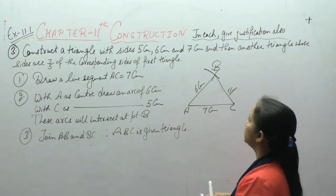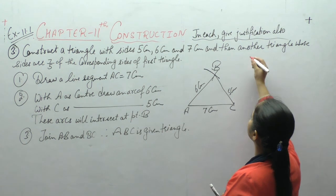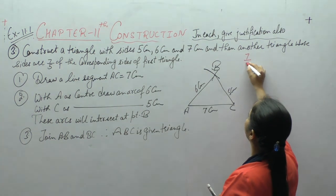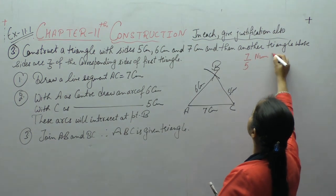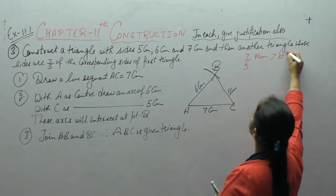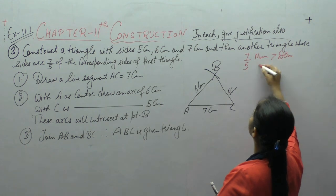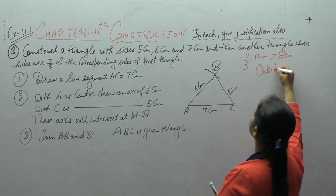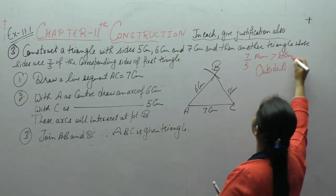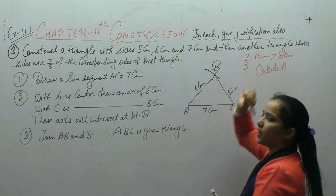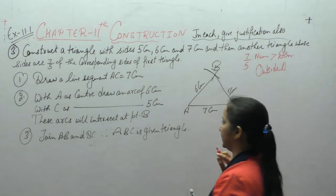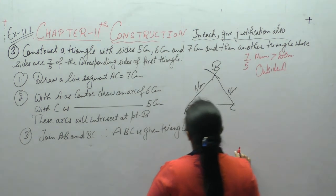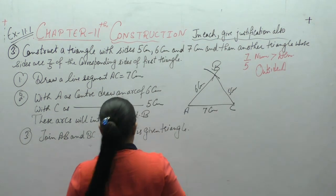अब हमें जो ratio given है 7/5 — numerator is greater than denominator, तो triangle जो बनेगी वो outside बनेगी इस triangle के।